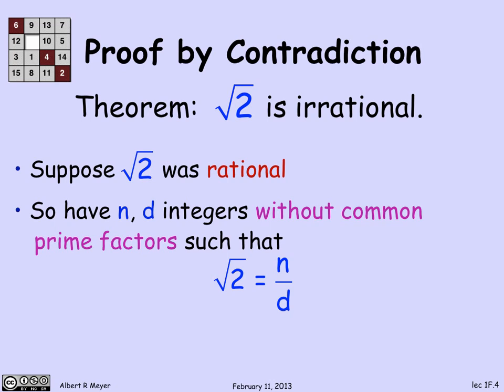We know that you can always reduce a fraction to lowest terms, which means there are no common factors. We have the square root of 2 equal to n over d, with no prime that divides both n and d.